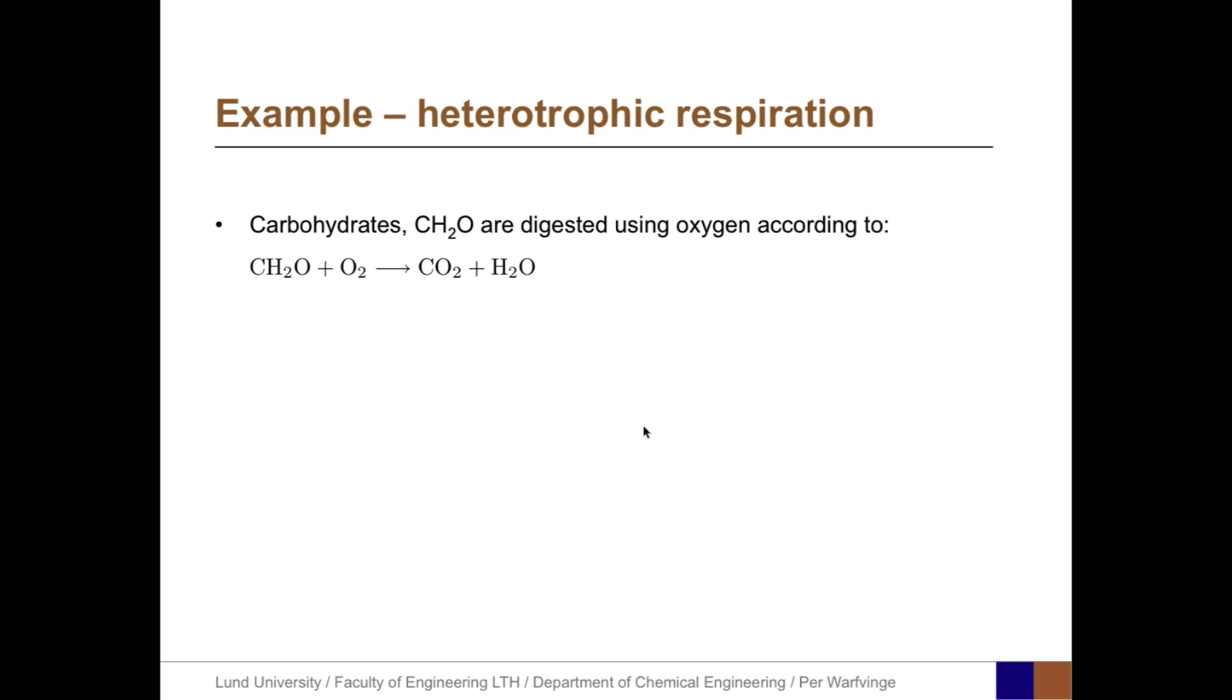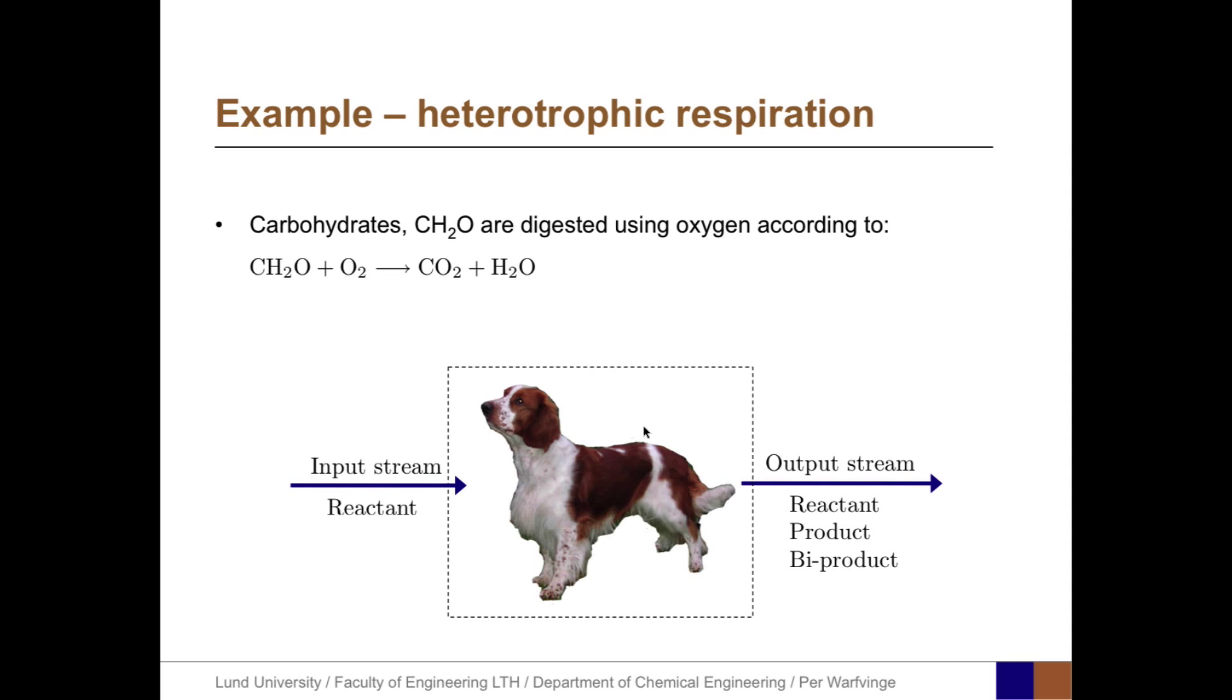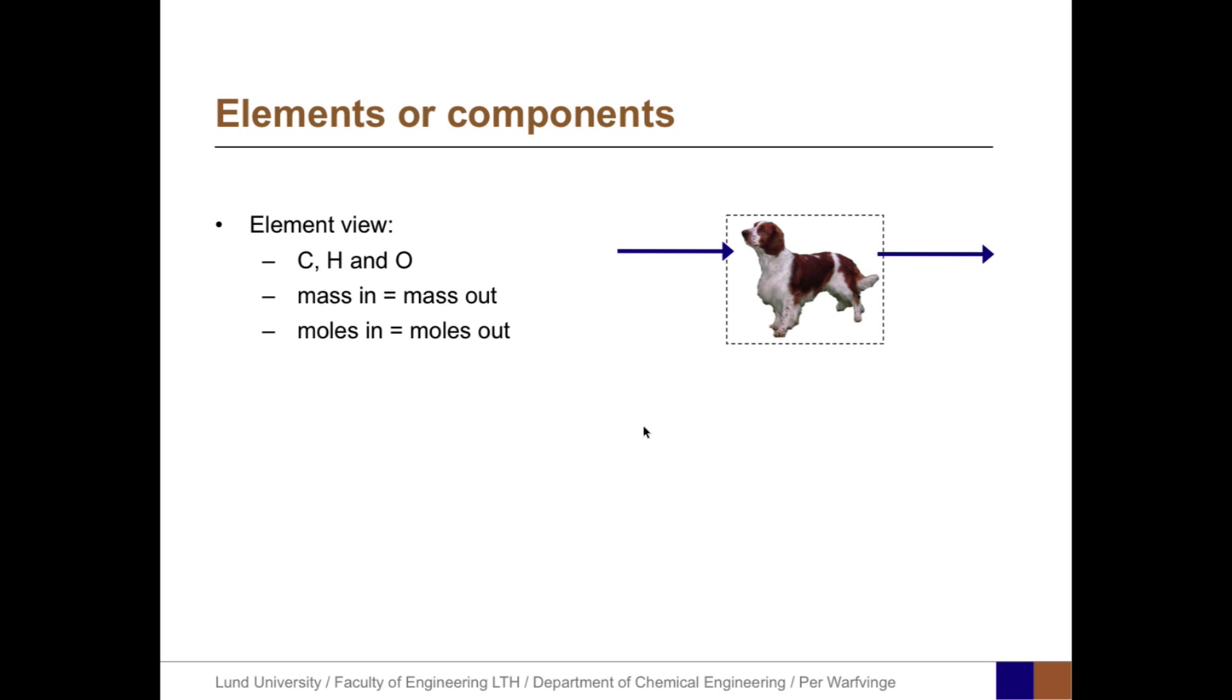Carbohydrates plus oxygen gas forms carbon dioxide and water in an irreversible reaction. The system can be an organism, so it has one input stream with carbohydrates and oxygen gas, and it has an output stream, typically with carbohydrates and oxygen, but also carbon dioxide and water as products.